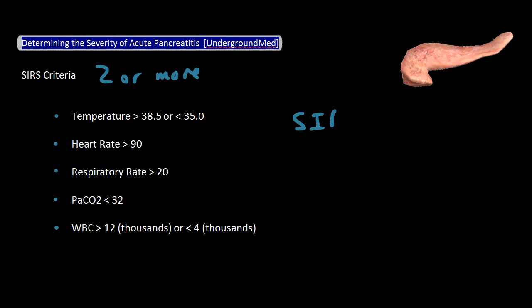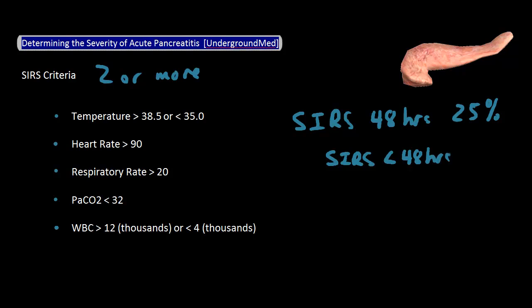Those with persistent SIRS — or SIRS for 48 hours or more — are at the highest risk of mortality, about 25%. Those with SIRS for less than 48 hours have a mortality of about 8%, and those patients who do not meet SIRS criteria have a mortality of 0% in one study. The nice thing about this criteria is that it's very simple, quick, and can be done right away when you see the patient, and is about as good as the other criteria as well.